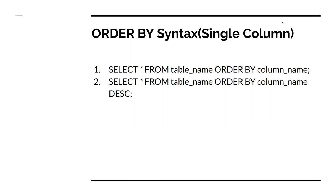Let's see the ORDER BY syntax for a single column. You can see two queries on my console: SELECT * FROM table_name ORDER BY column_name. By default this returns output in ascending order. If you want descending order, you need to explicitly mention DESC: SELECT * FROM table_name ORDER BY column_name DESC.